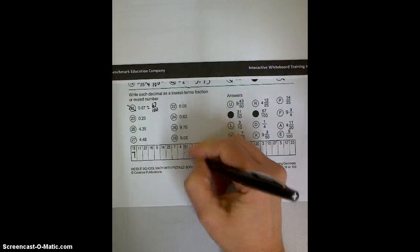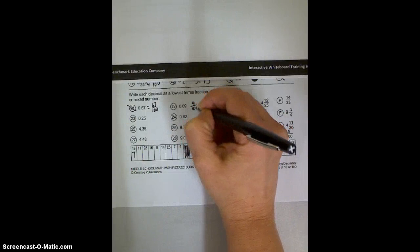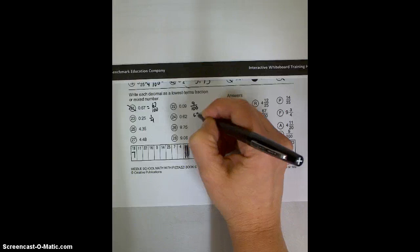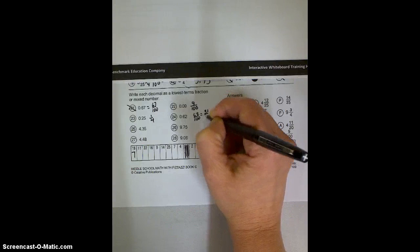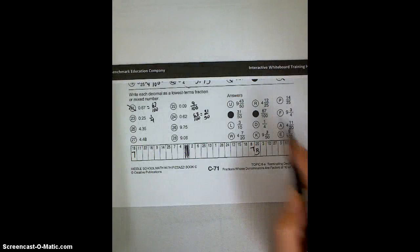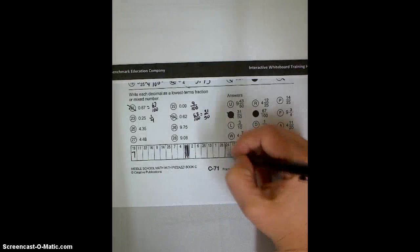This one, we can write as 9 hundredths, not tenths, because it's in the hundredths place. This one is the same as 1 fourth. 62 hundredths, which could be reduced. I'm going to just divide by 2 to start with and get 31 fiftieths. Is there an option for that one? Yep, there it is. It's another blacked out one. So 24 will be blacked out again. Alright, moving on so I don't run out of time.